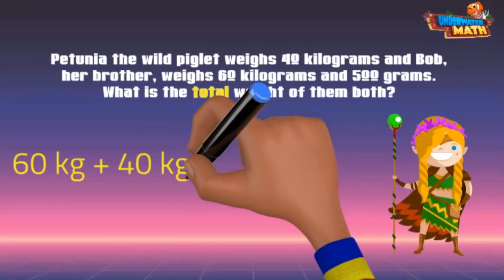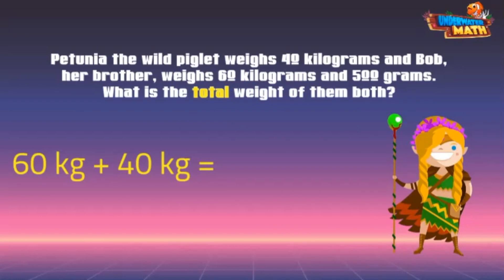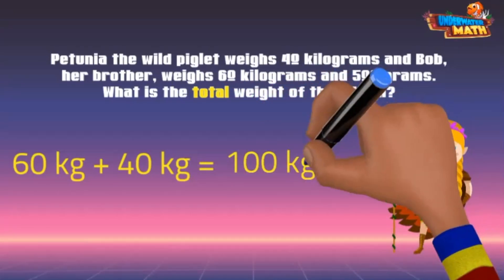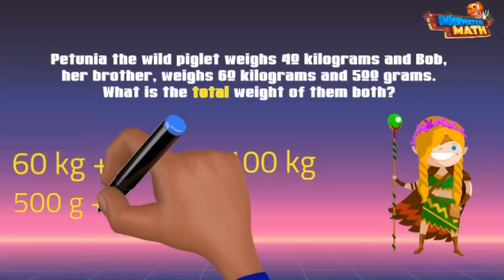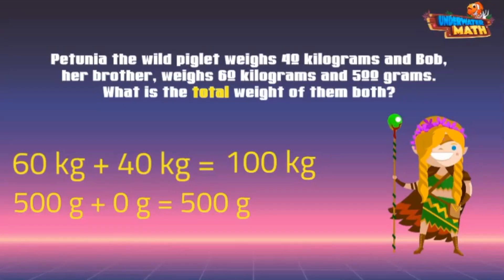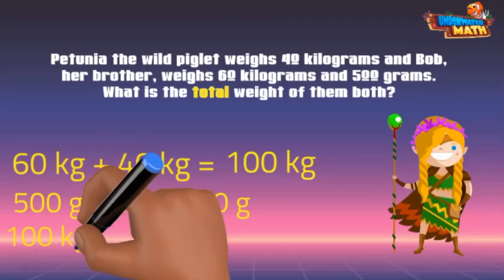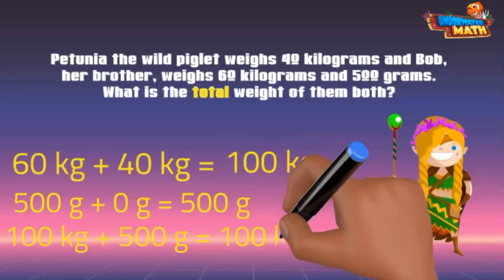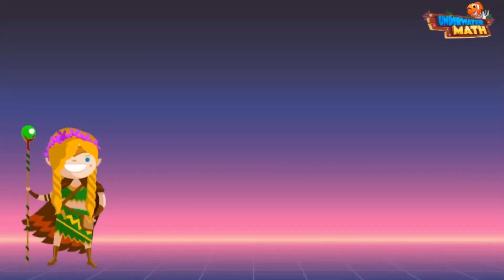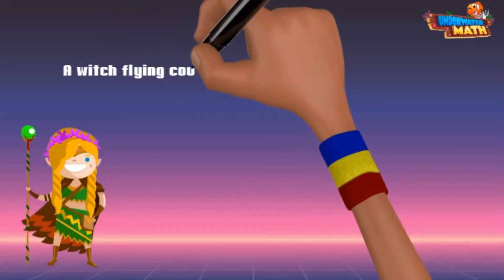To find the total weight, we'll add 60 kilograms to 40 kilograms, which equals 100 kilograms. 500 grams plus zero grams is still 500 grams. So the total weight of Petunia and Bob is 100 kilograms and 500 grams.